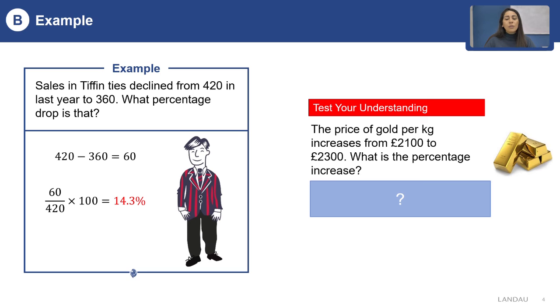Then, this should be divided by the original value which is 2100. And then, it should be multiplied by 100. Therefore, this is how we calculate the percentage change.